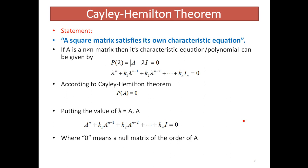What does it mean? The characteristic equation, or polynomial, in terms of lambda, is P(λ) equal to the determinant of (A minus λI) equal to 0. We use (A minus λI) because lambda is a scalar quantity and we need to subtract it from matrix A, so we multiply lambda by the identity matrix I.